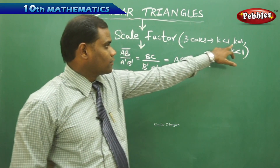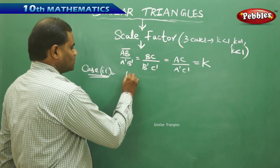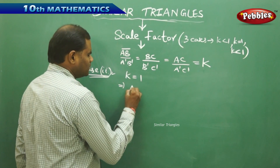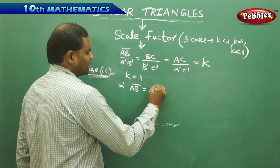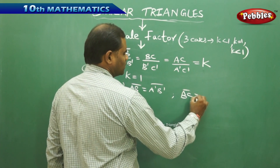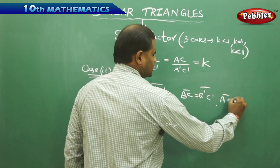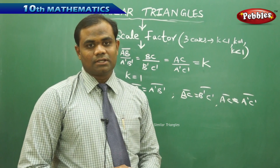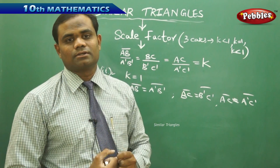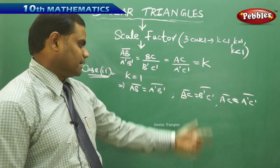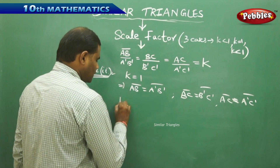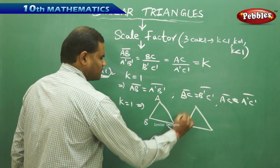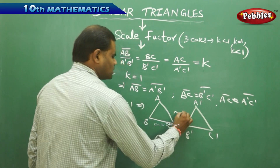Now let's take the second case of k equal to 1. If k equals 1, substituting into the ratios gives AB = A'B', BC = B'C', and AC = A'C' — all three sides are equal. That means the object neither increases nor decreases, neither enlarges nor compresses, so we get the same object. Therefore, k equal to 1 implies the object has retained its shape.